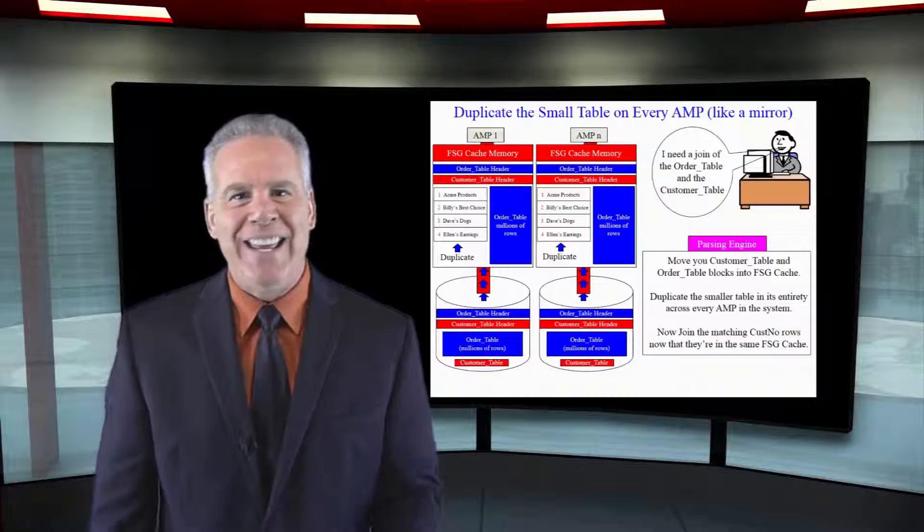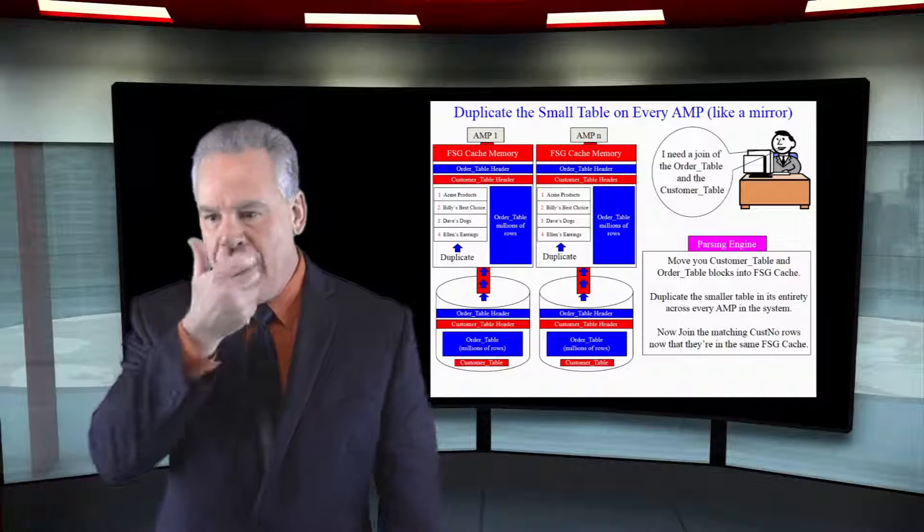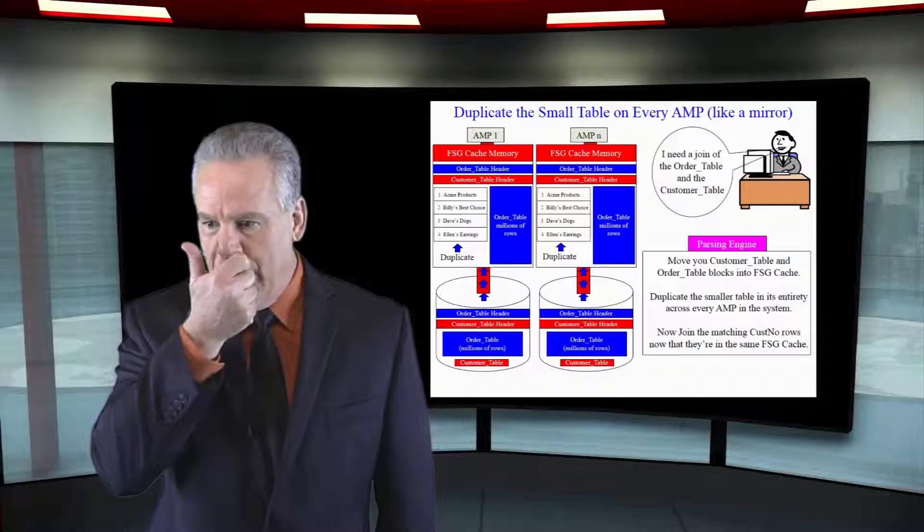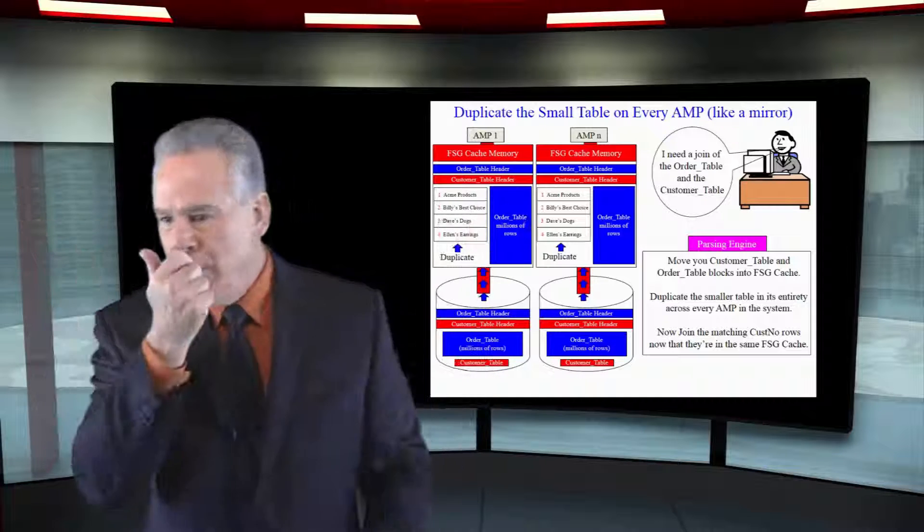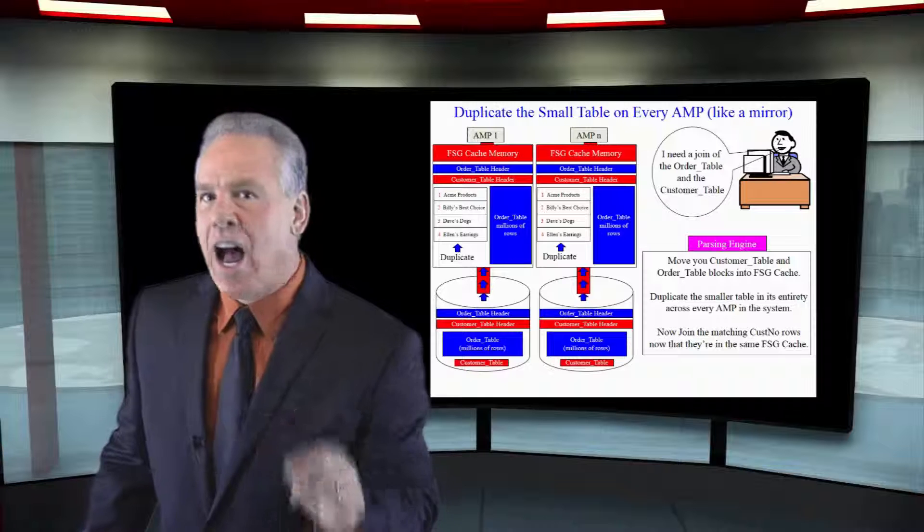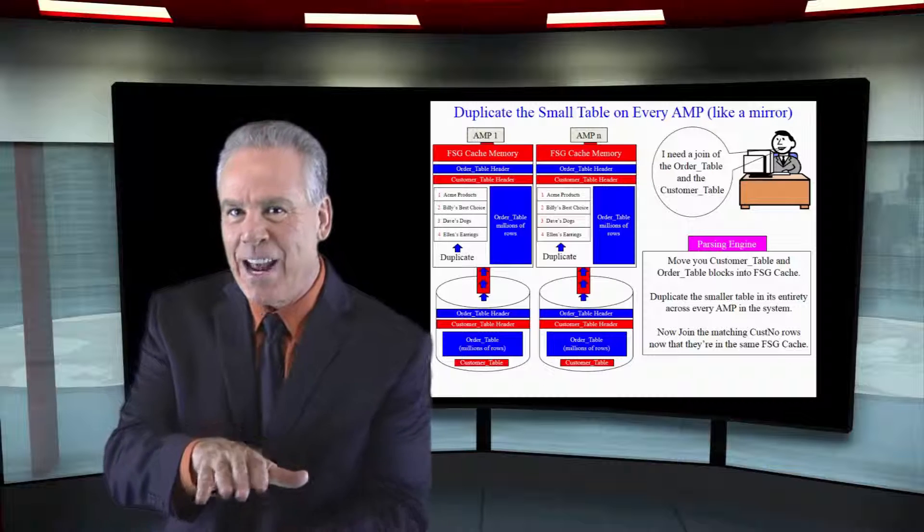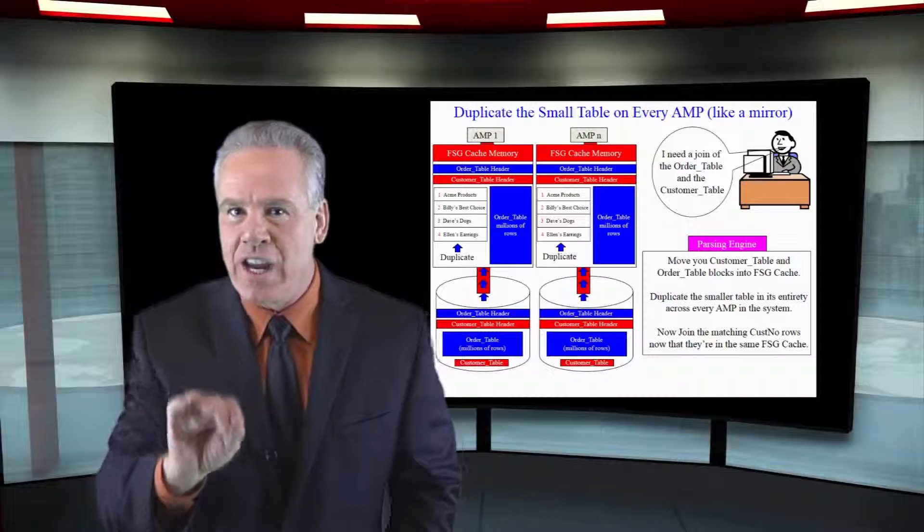Let's see this join in action. As you can see here, the parsing engine said, I need you to bring your order table blocks amps up into your memory. Don't be moving those millions of rows across that binet. Secondly, I'm going to need you guys to have the duplication of the four customers. And I want you to duplicate that on each amp.